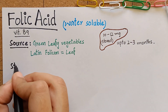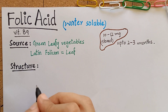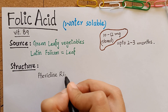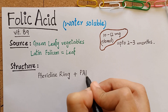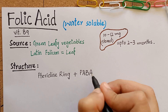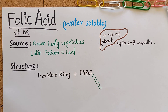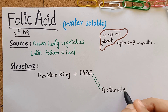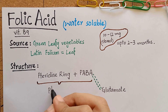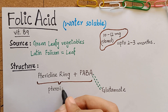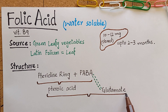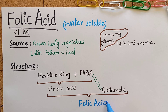The chemical structure of folic acid consists of three components: a pteridine ring, para-aminobenzoic acid or PABA, which is linked to glutamic acid. The pteridine and PABA together are known as pteroic acid, and this complete structure — pteroic acid and glutamate — is known as folic acid.